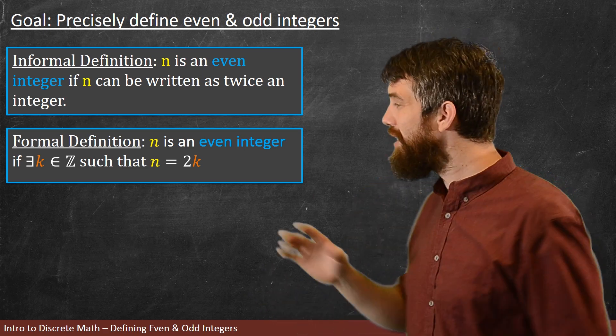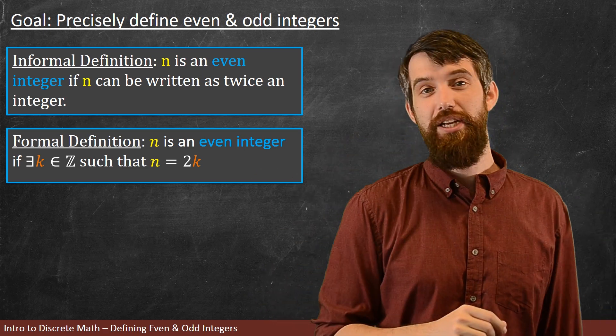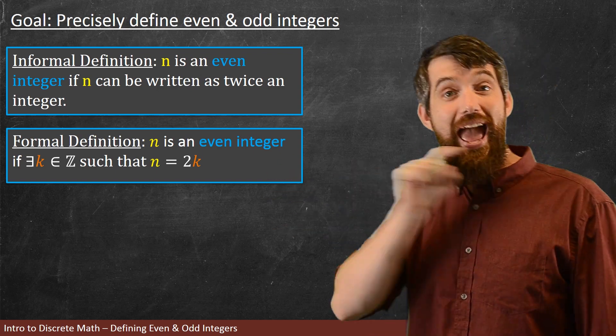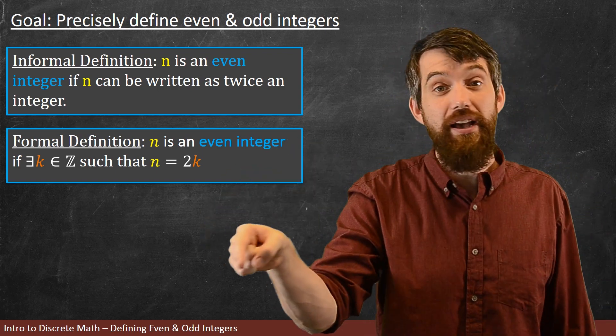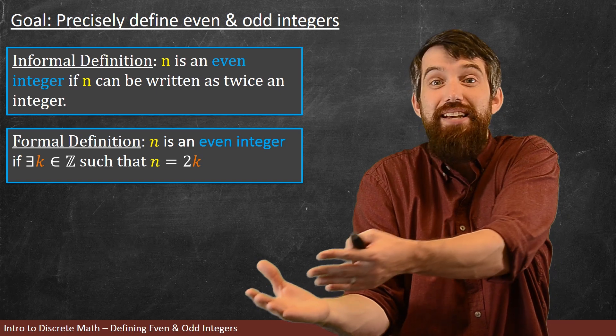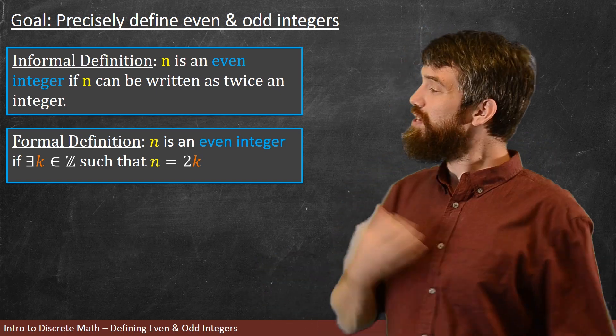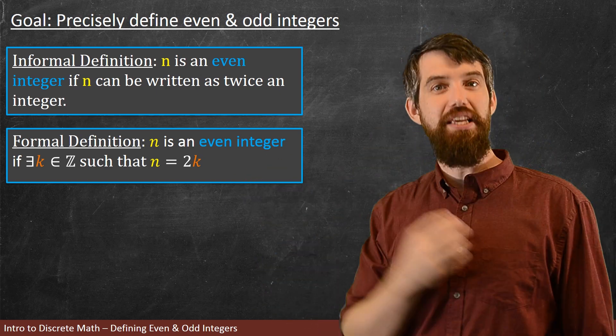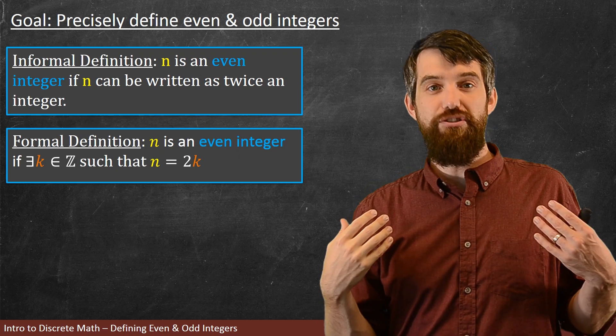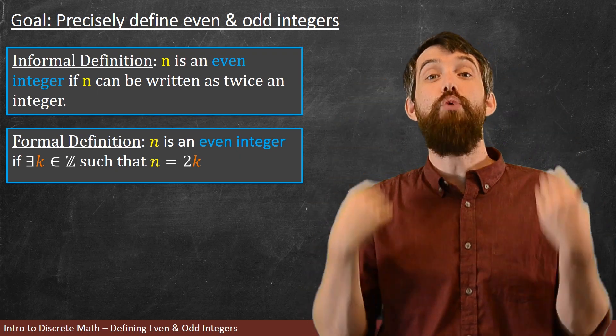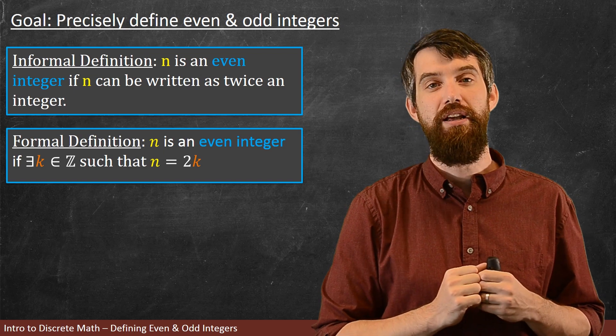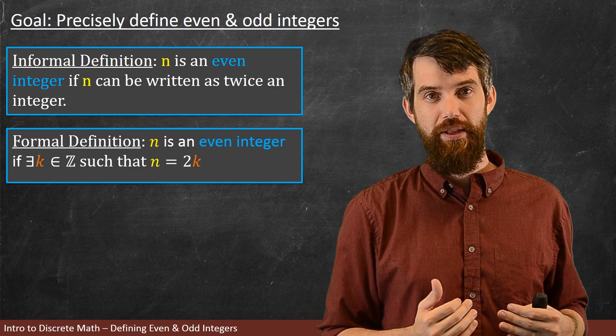Now, why do I like this formal definition so much? It's because now there's actually an equation here, n equals 2k. And I know something about what k is, k is an integer. So if I want to make a proof that involves the even integers, now I can actually substitute it in. I can write equations. I have a precise way of writing what I mean when I talk about an even integer.